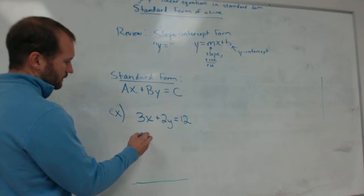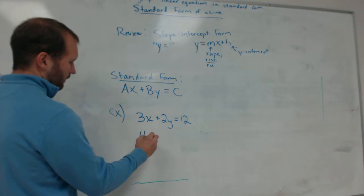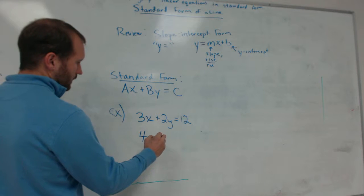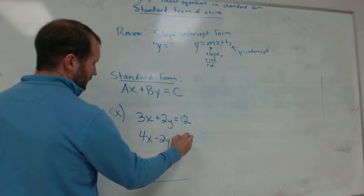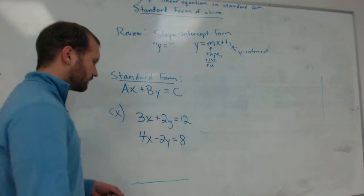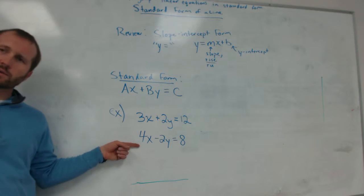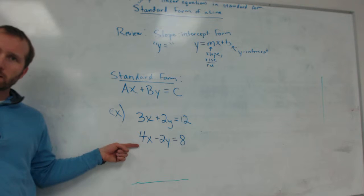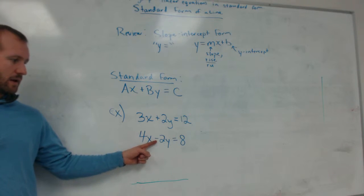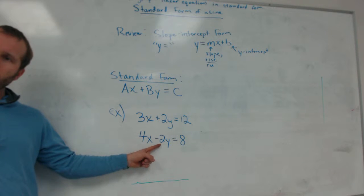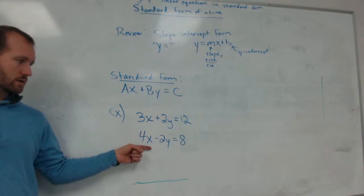Here's another line that's in standard form. 4x minus 2y equals 8. What is a in this equation? 4. What is b? Minus negative 2. Yeah, b is negative 2. And what is c in this equation? 8.